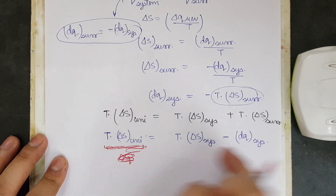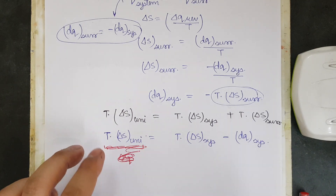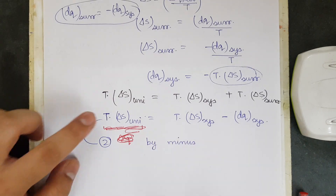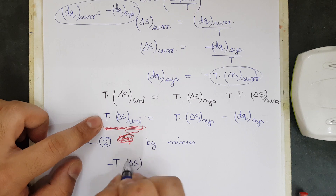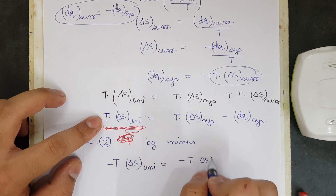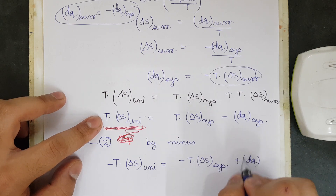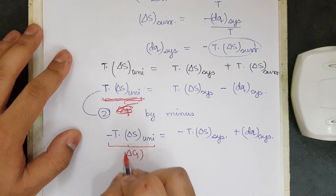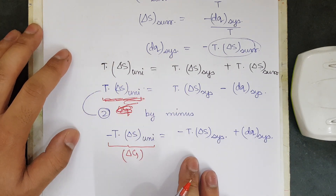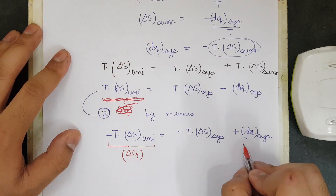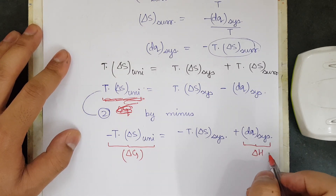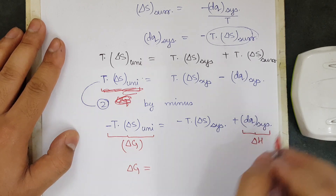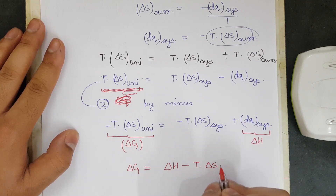Multiplying through by minus one, minus T times delta S universe equals minus T times delta S system plus DQ of the system. This expression is defined as delta G, the Gibbs free energy. Here DQ of the system is called delta H (enthalpy), and the other term is T times delta S. So delta G equals delta H minus T times delta S.